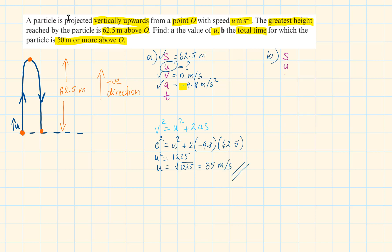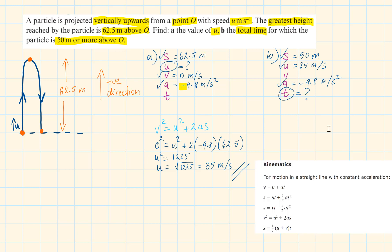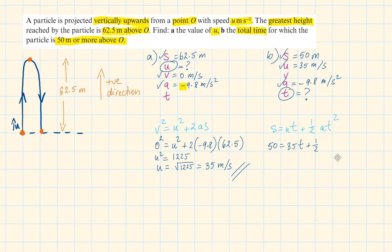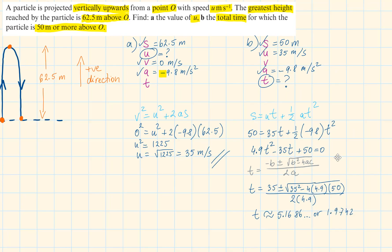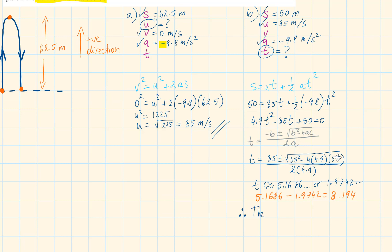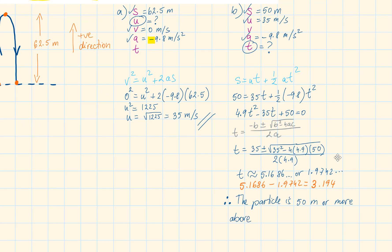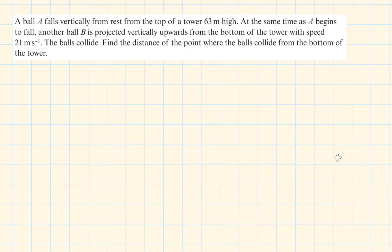To work out the total time for which the particle is 50 metres or more above O, we set S equal to 50. We know U is 35, acceleration is minus 9.8, and we need time. When S equals 50, there will be two values of T — one on the way up and one on the way down. Using the formula S equals UT plus half AT squared and solving with the quadratic formula, we get two values of T. Subtracting these gives the answer: the particle is 50 metres or more above O for 3.2 seconds to two significant figures.